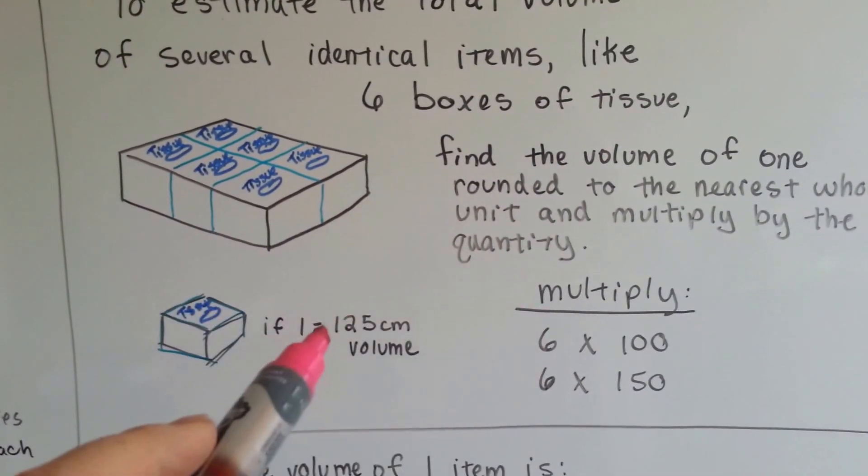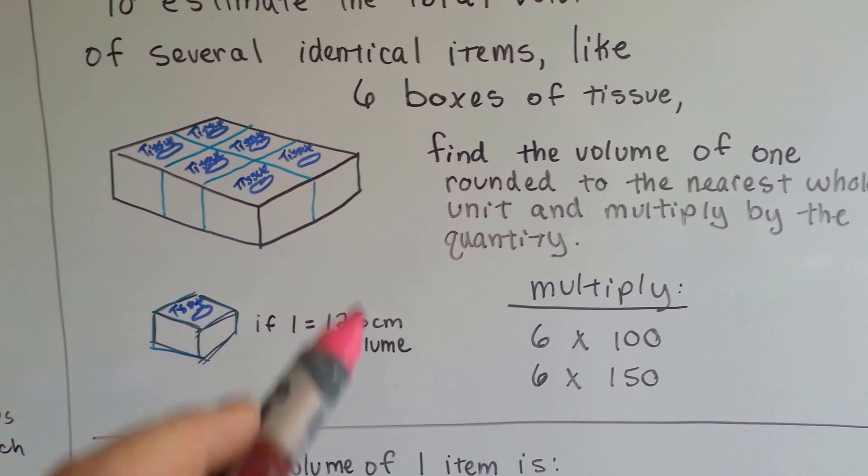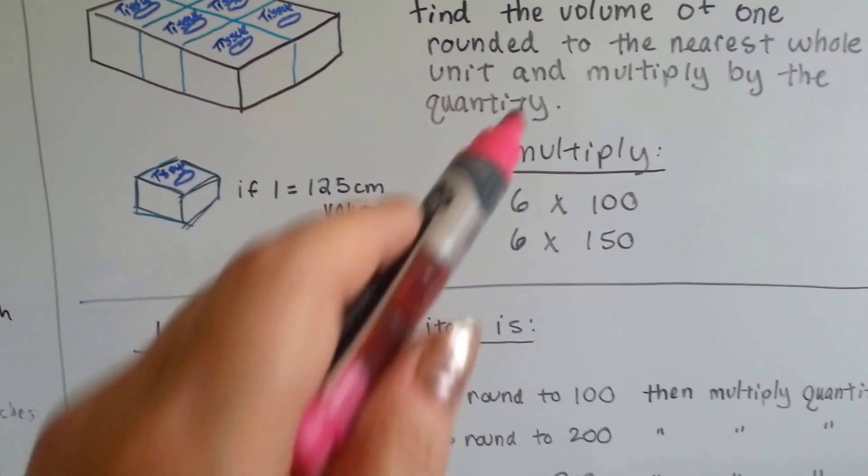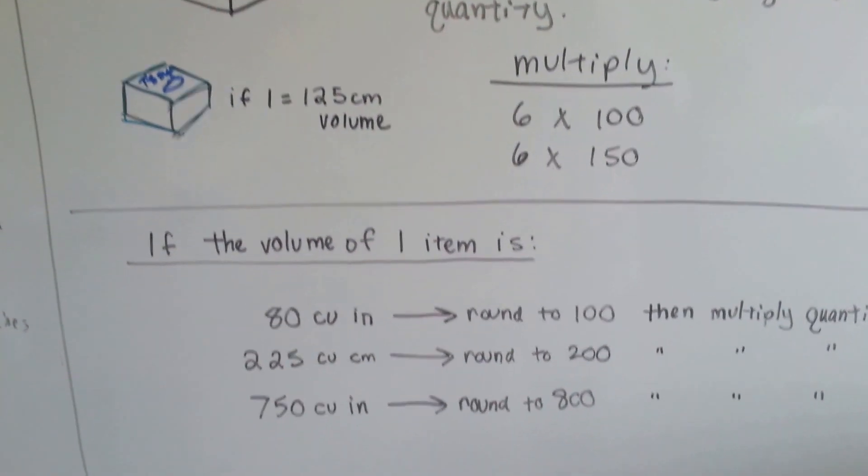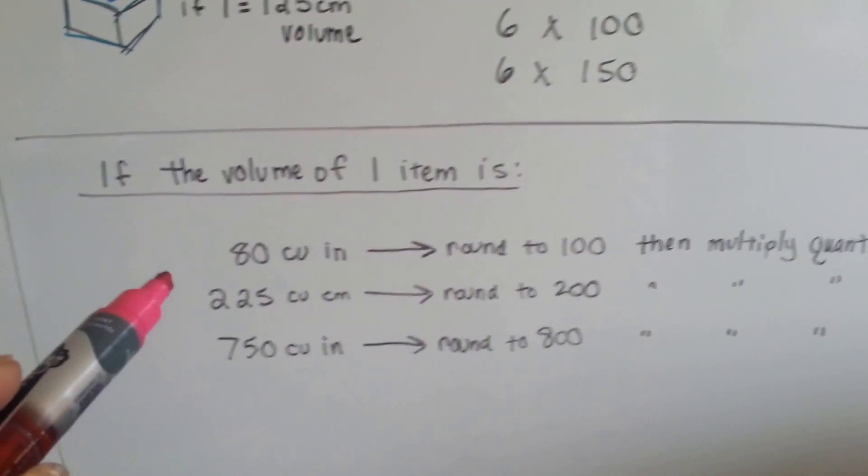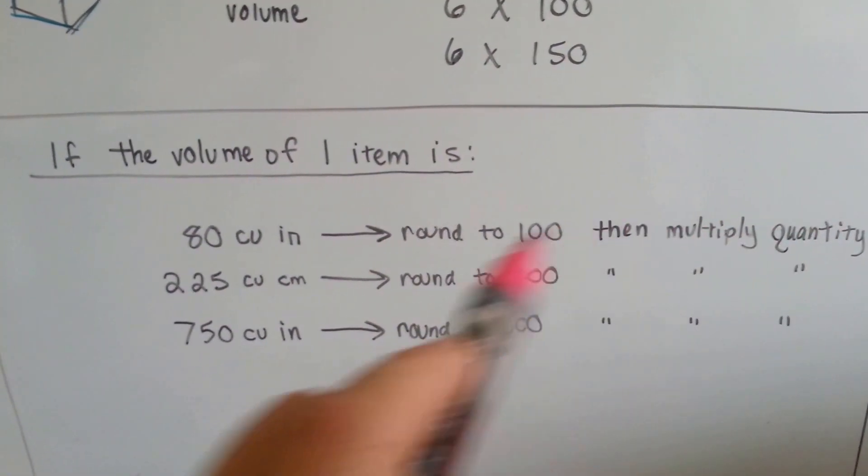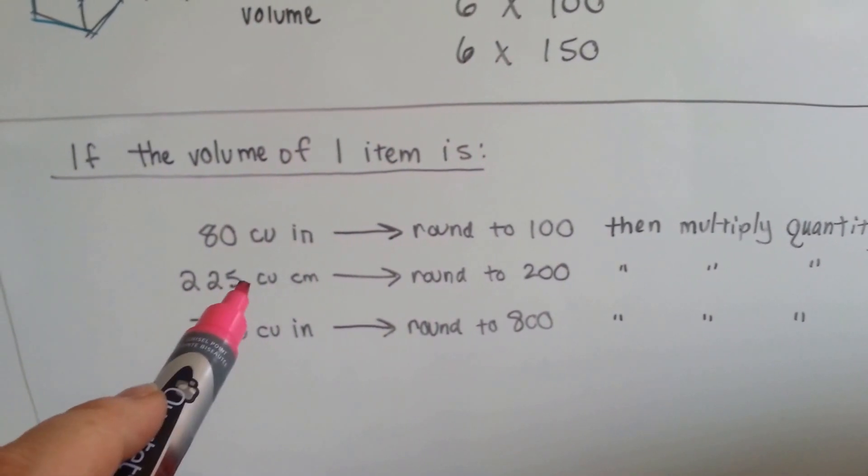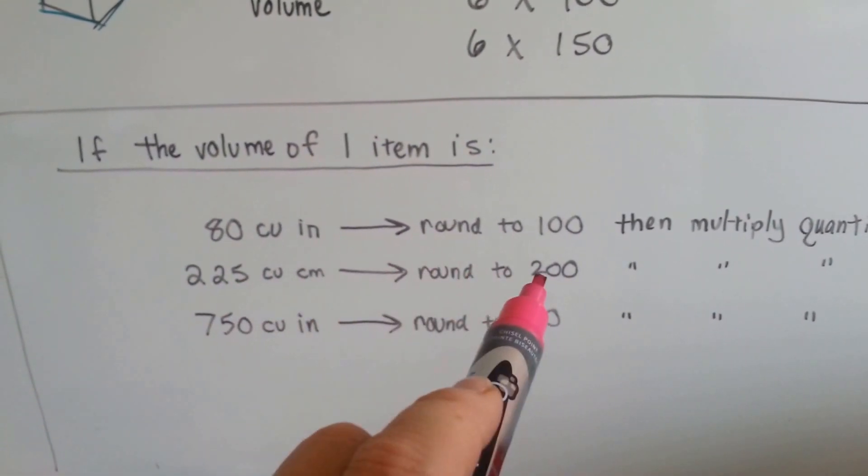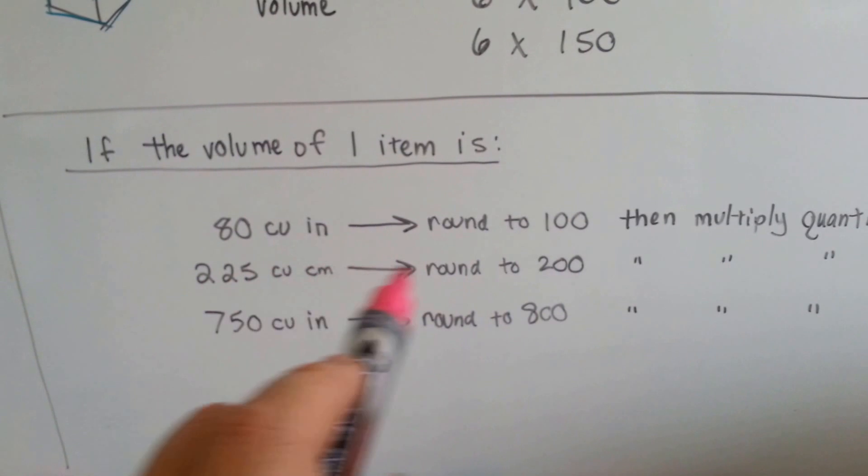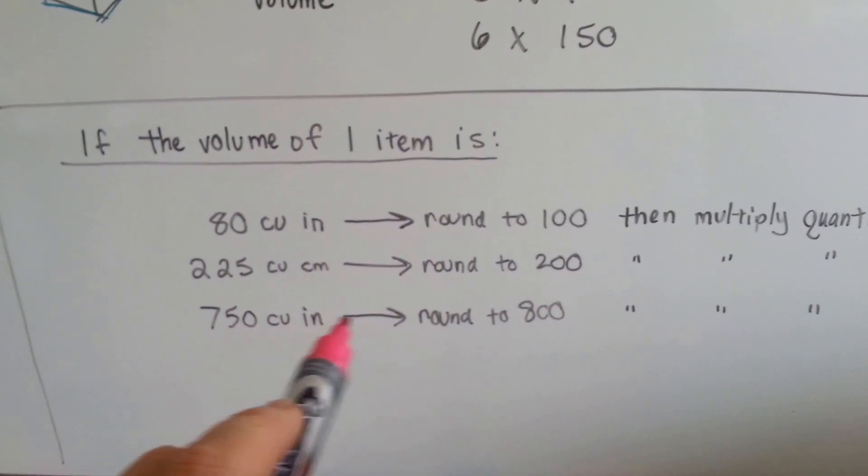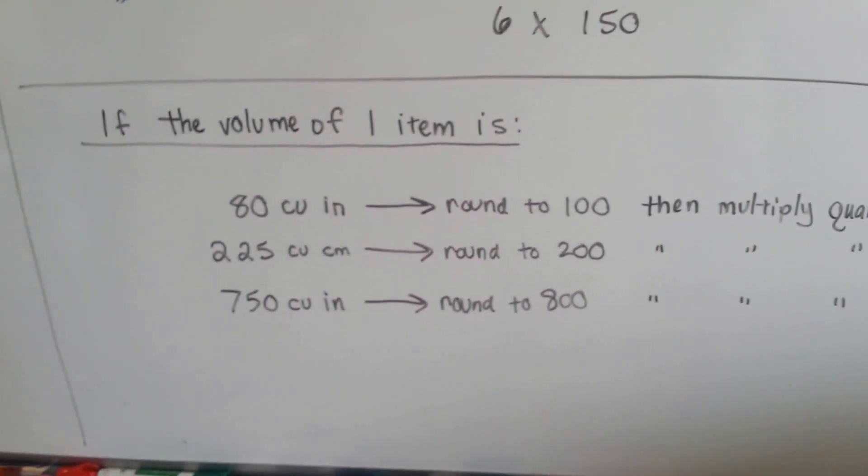If you want the exact amount, you can multiply it by the exact amount, one twenty-five times six. But to estimate, round it to the nearest whole unit. If the volume of one item is eighty cubic inches, round it to a hundred, then multiply it by the quantity. If it's two hundred and twenty-five cubic centimeters, round it to two hundred, or two fifty. If it's seven hundred and fifty, you could round it to eight hundred, and then multiply it by the quantity.